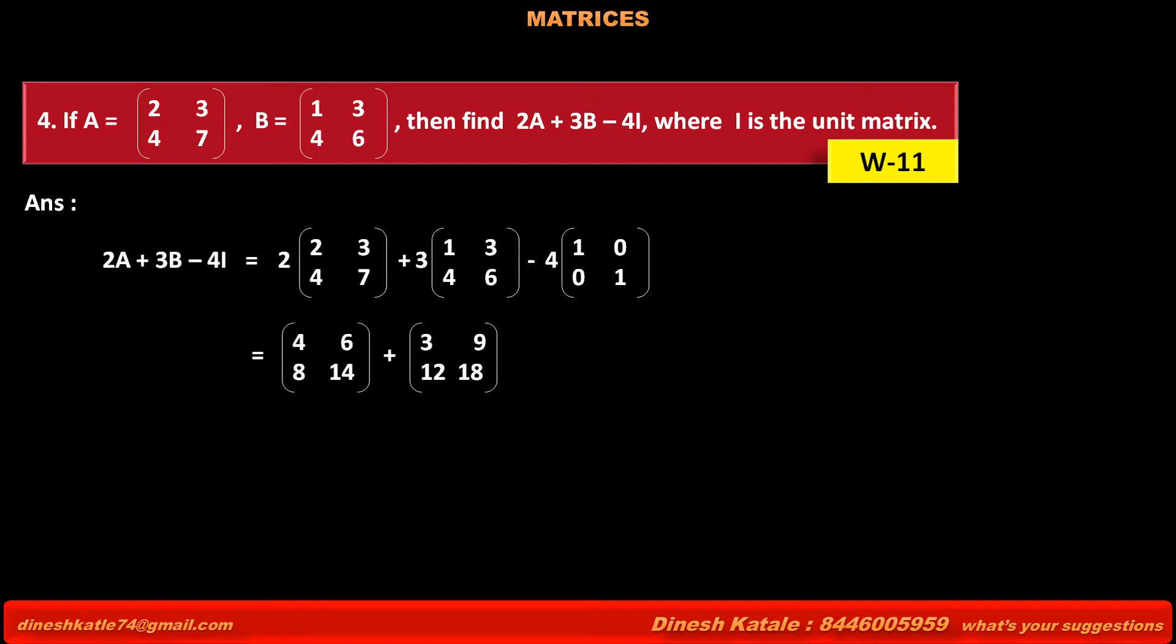Plus the second term having matrix: 3 times 1 is 3, 3 times 3 is 9, 3 times 4 is 12, 3 times 6 is 18.